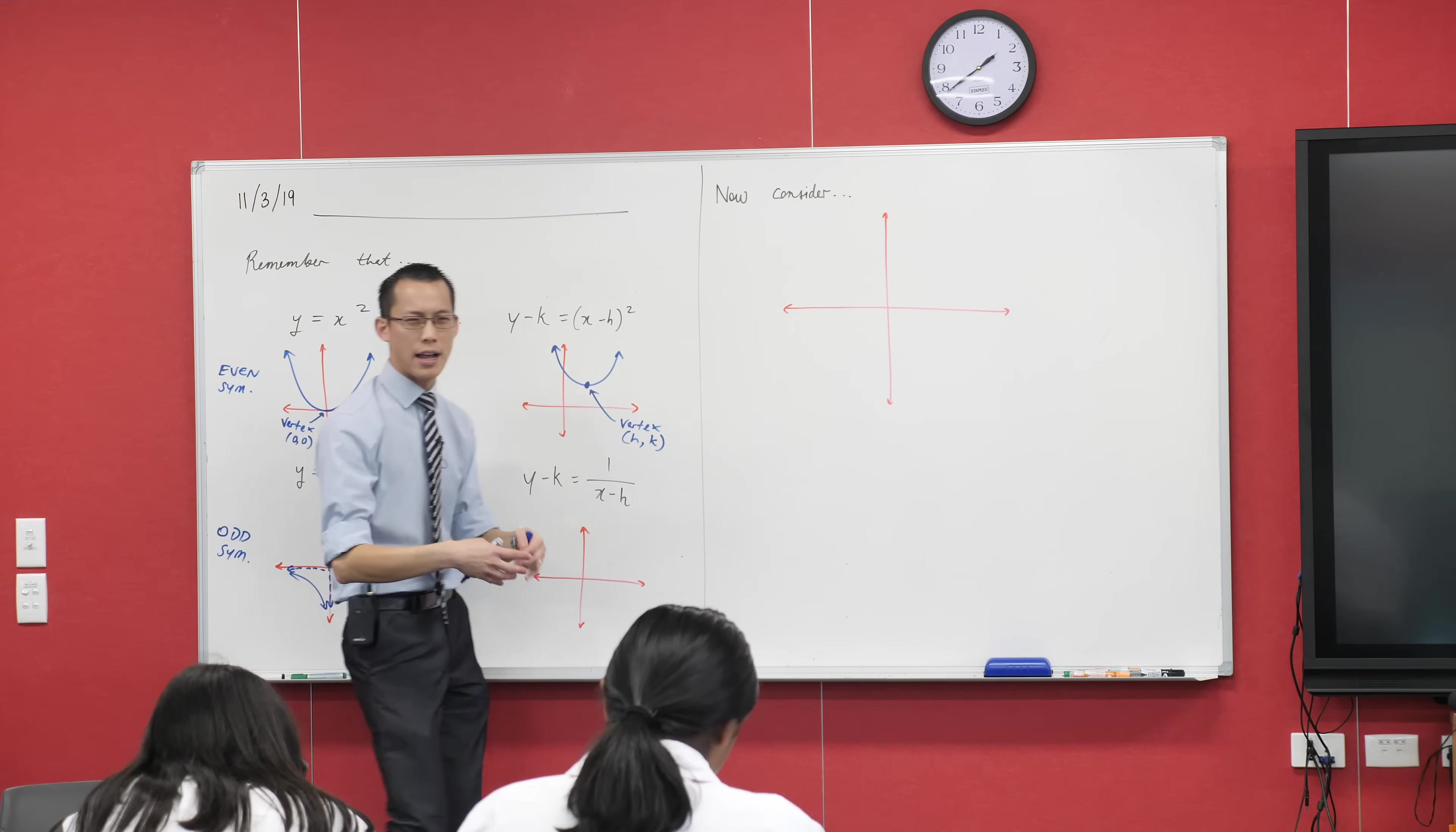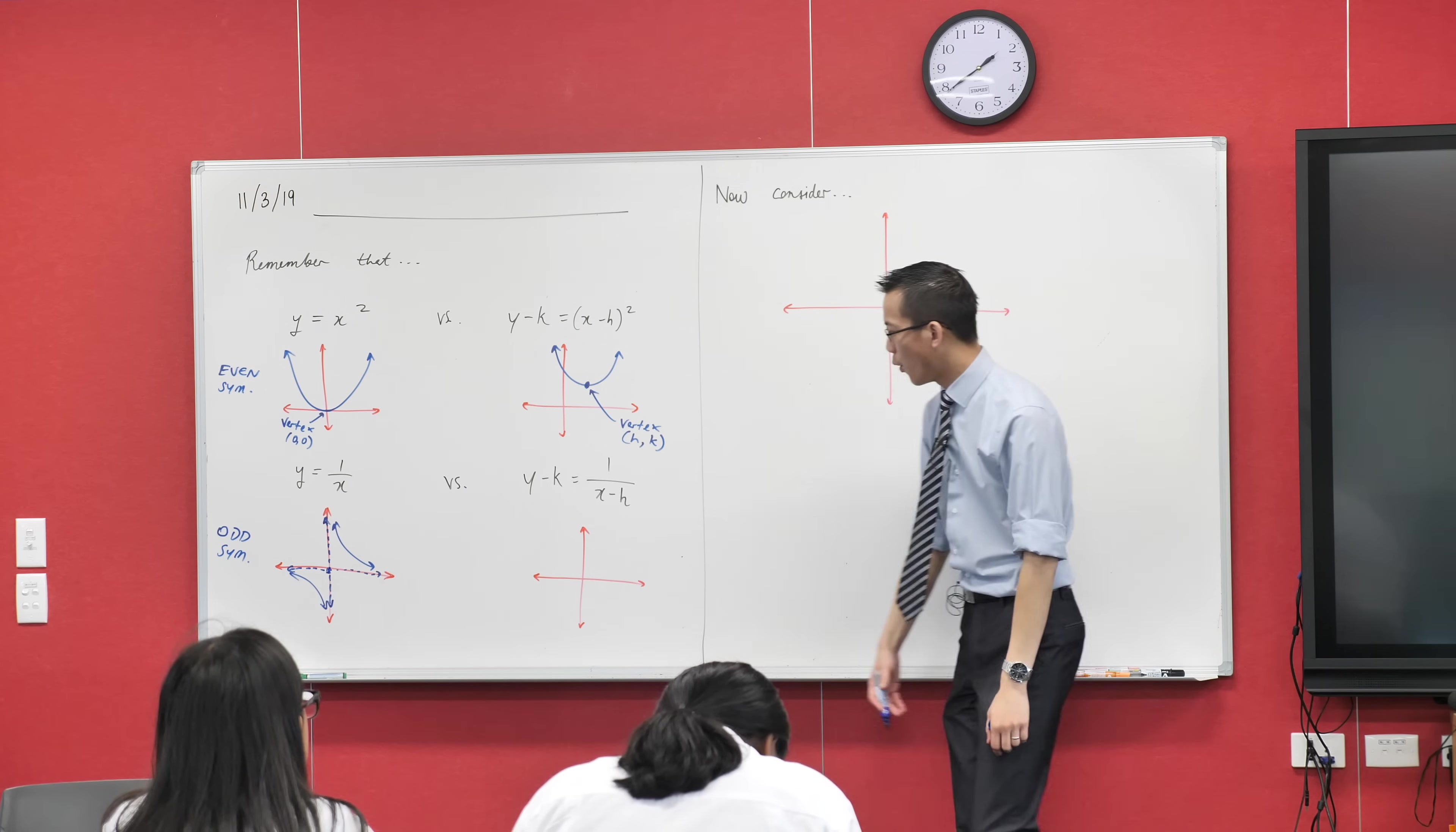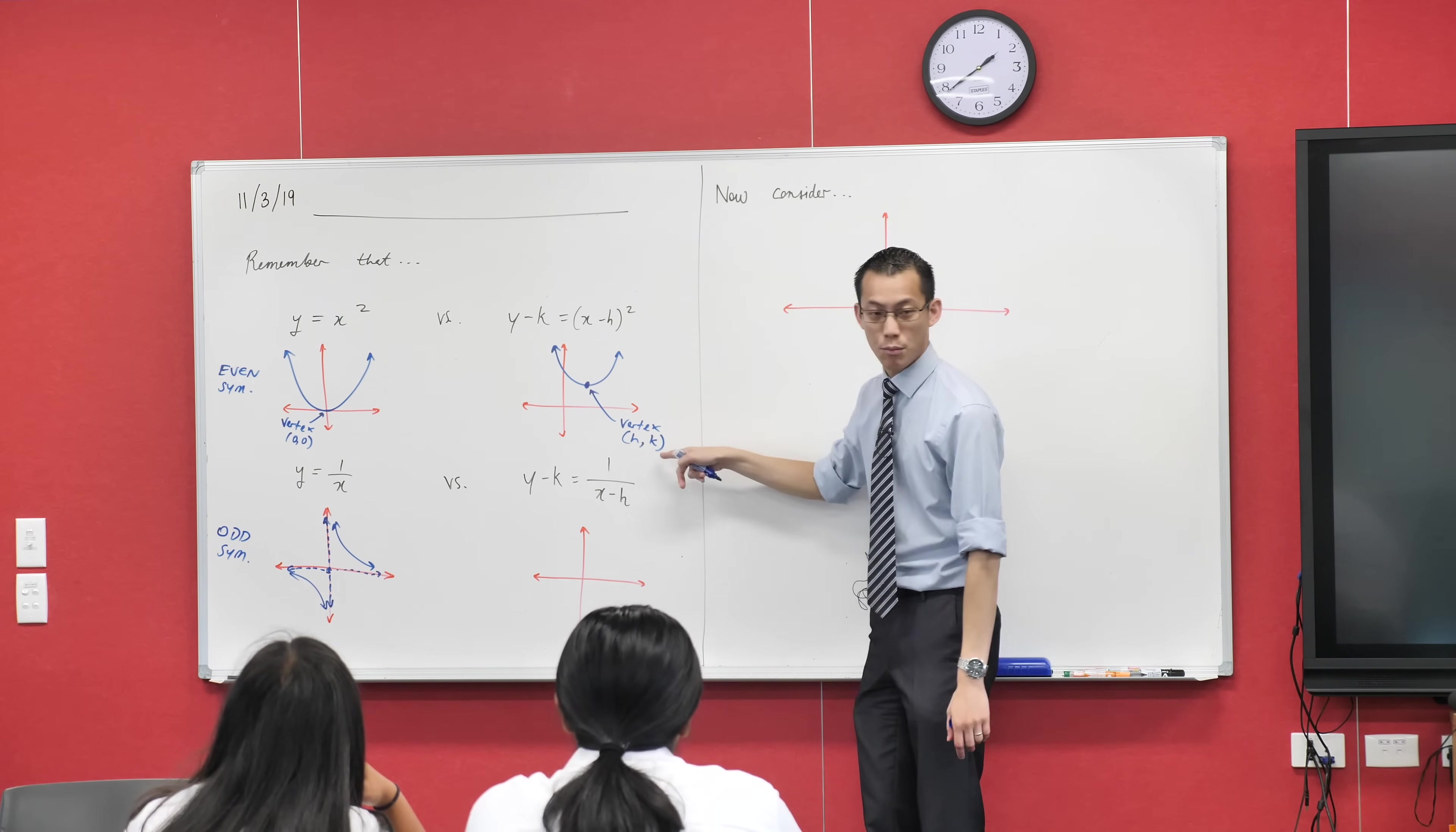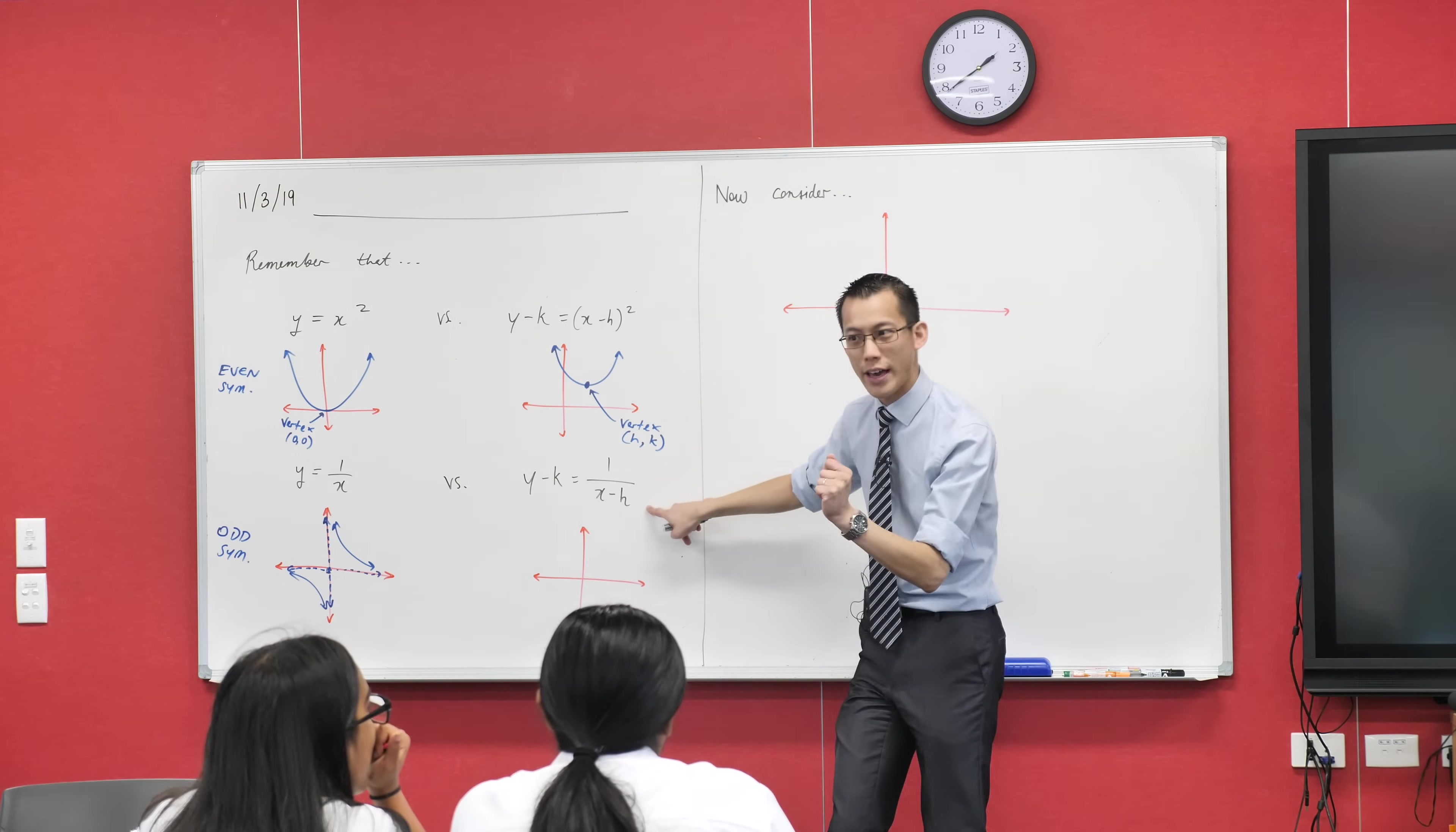This horizontal asymptote - can you see the graph just kind of ignores it in the middle? The graph is not approaching there in the middle, it's only approaching at the edges, we call these the extremities. Okay, so you've got two different, very very different kinds of asymptotes. Where do the asymptotes meet? They meet at zero zero, at the origin. Right there, smack bang.